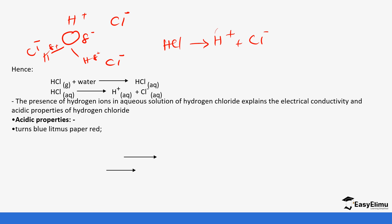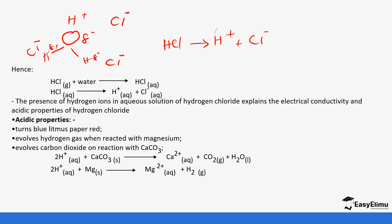The acidic properties we notice: it turns blue litmus paper red, it evolves hydrogen gas when it reacts with magnesium, it evolves carbon dioxide when it reacts with carbonates. But methylbenzene has a weak attraction for hydrogen chloride because it's non-polar. Hence, hydrogen chloride remains as a molecule in methylbenzene.